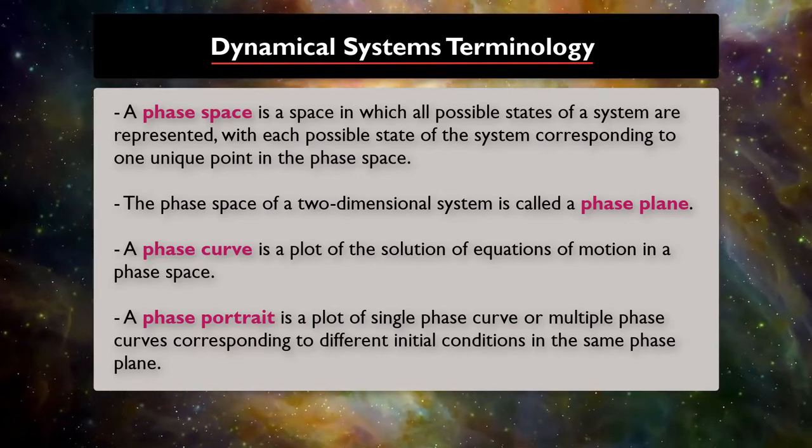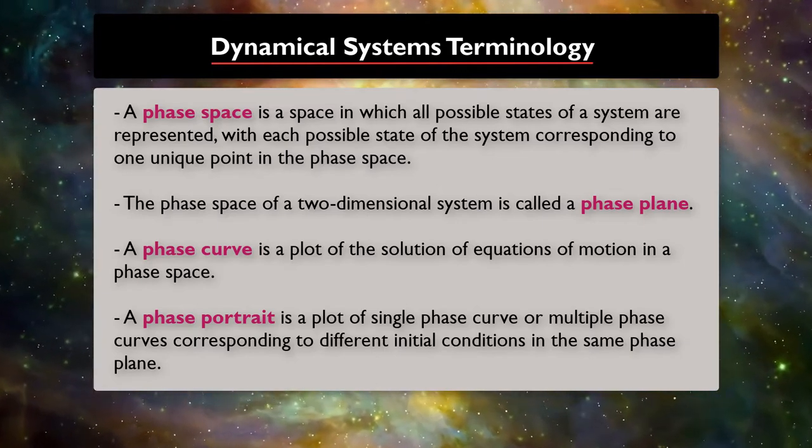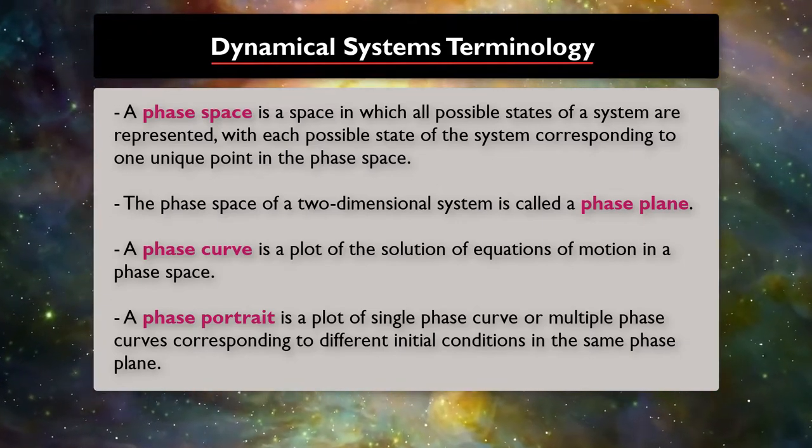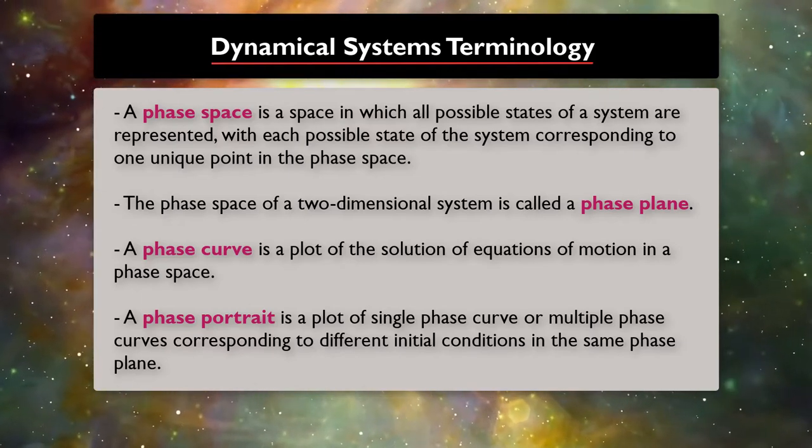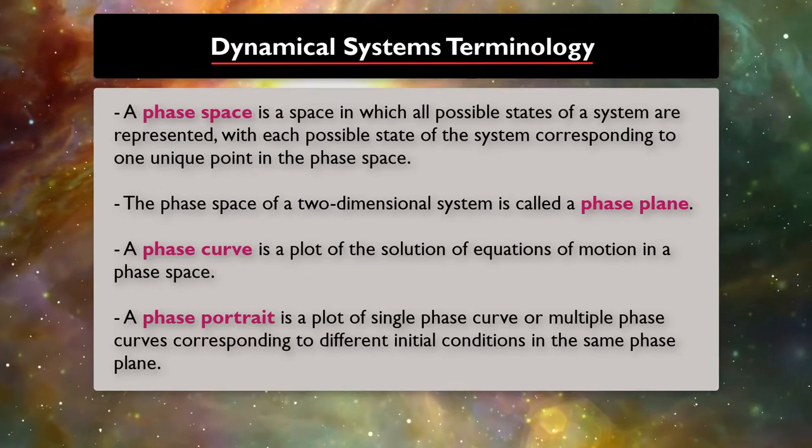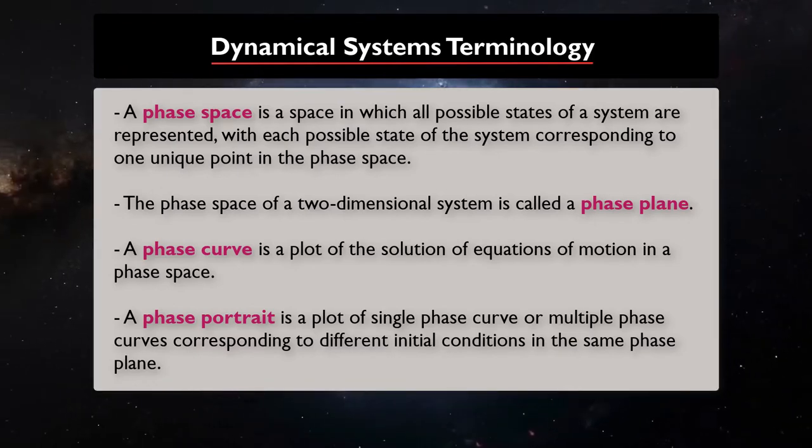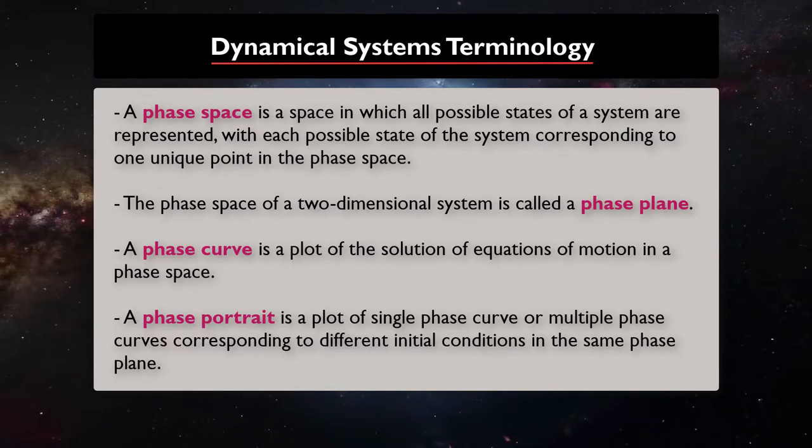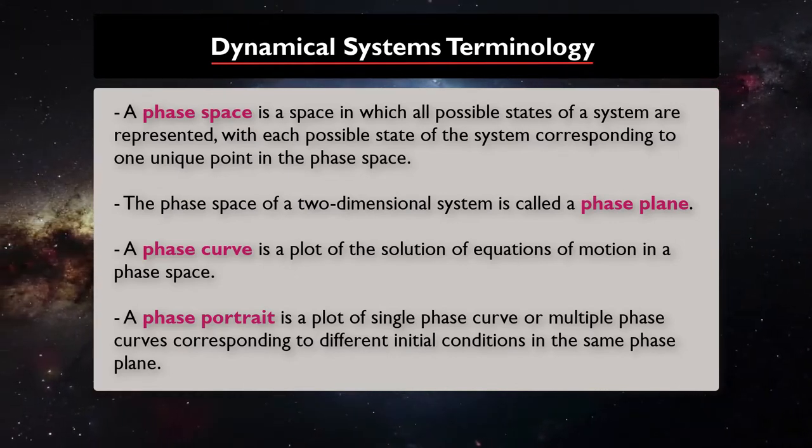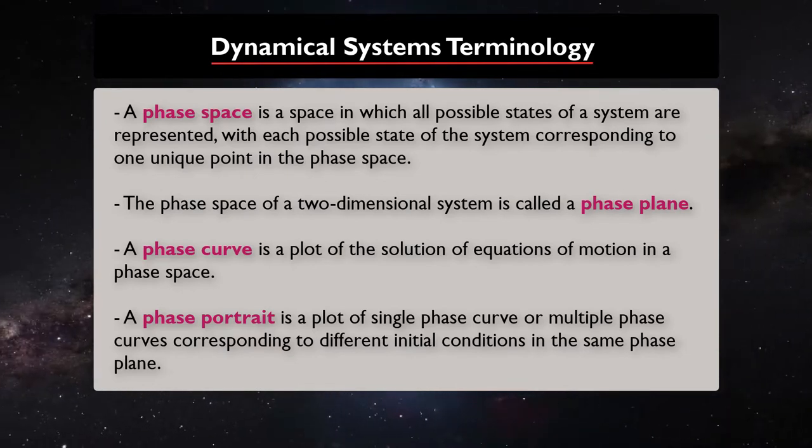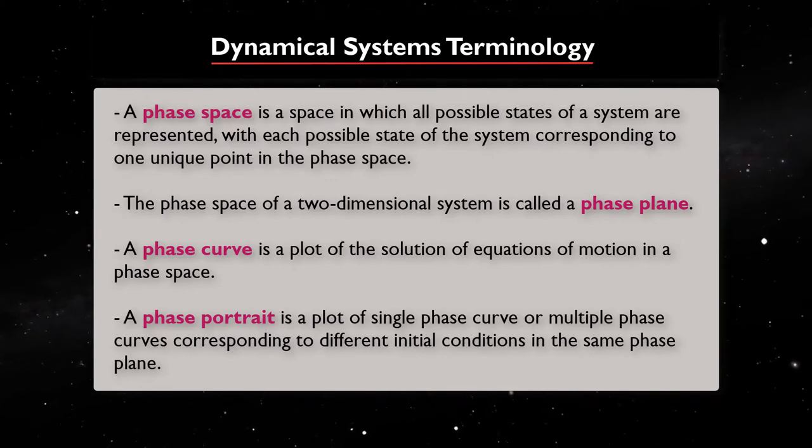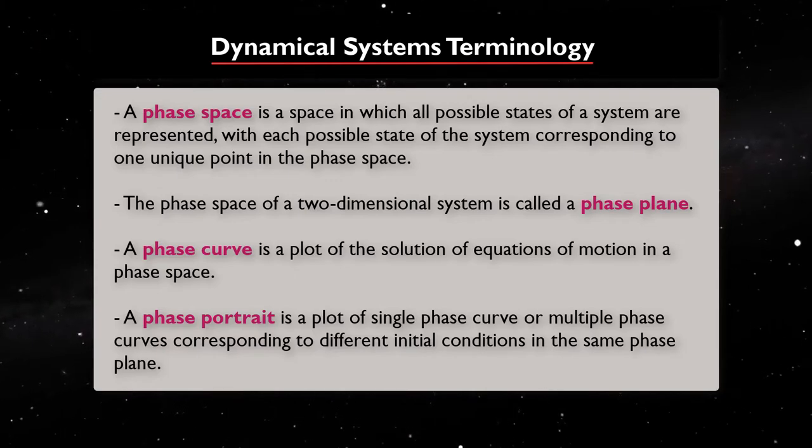The phase curve depends on the initial state, and if we plot single or multiple of them corresponding to different initial conditions in the same phase plane, then we have a phase portrait. To fully understand the behavior of a dynamical system, we also need to know how the system moves from one position to another. This is described by the trajectories through a state space. A trajectory or path is a set of positions in a state space through which a system might pass successfully.